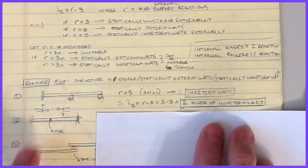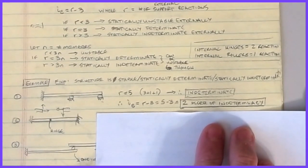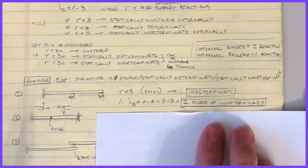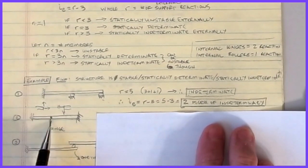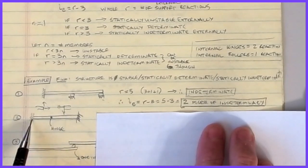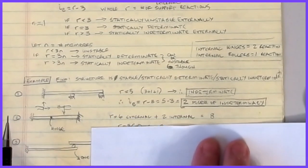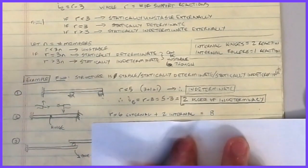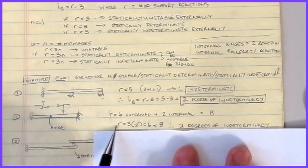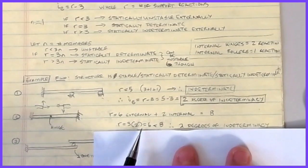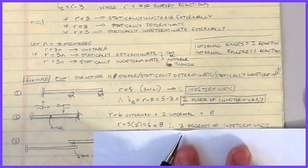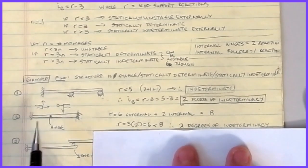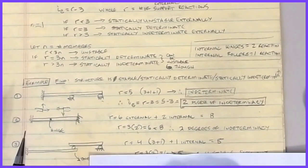Now the hinge example: n should be two because you can blow it apart at the hinge. r is three from one fixed support plus three from the other fixed support plus two internals from the hinge, giving eight total. Three times n equals three times two equals six, and six is less than eight, so we have two degrees of indeterminacy — even on this structure, even after blowing it apart, it's still two degrees indeterminate.